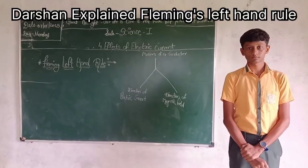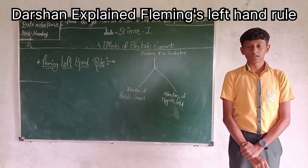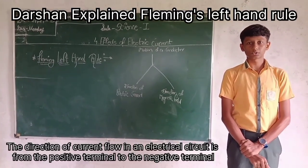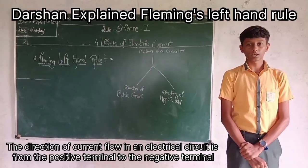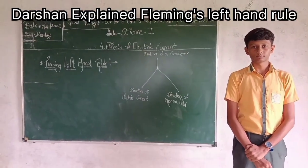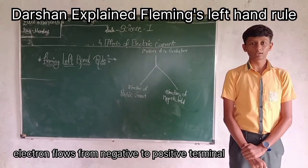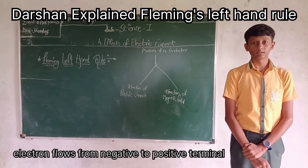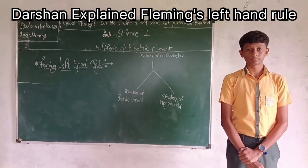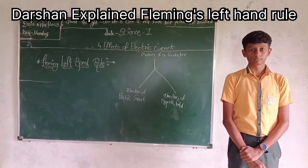What is the direction of electric current? The direction of electric current is from positive terminal to negative terminal. And the direction of electron? The direction of electron is from negative to positive.